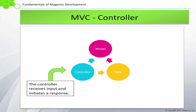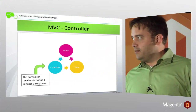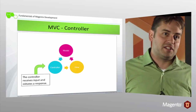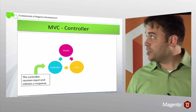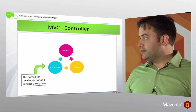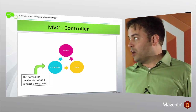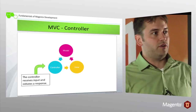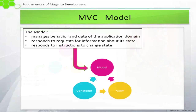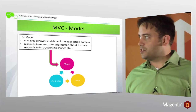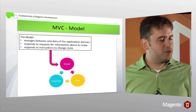Typical MVC flow: the controller gets the request. In Magento the layout is consulted, and the view will actually grab the model. The model is responsible for representing things in your system, and also for storage, retrieval, and putting things in. The model actually has a few different layers in Magento, and of course we touch on all of that.